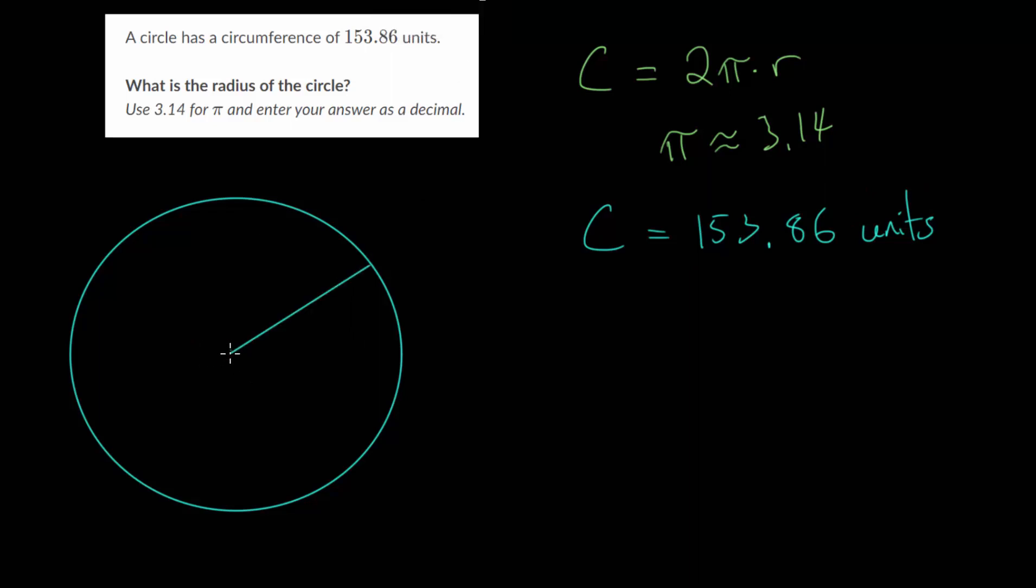We want to figure out what our radius is. Remember the radius, the R value, is the distance from the center of the circle to the edge of the circle. That will be the same length anytime you draw a line from the center to the edge. These are all radii of the circle, and they're all equal to each other.